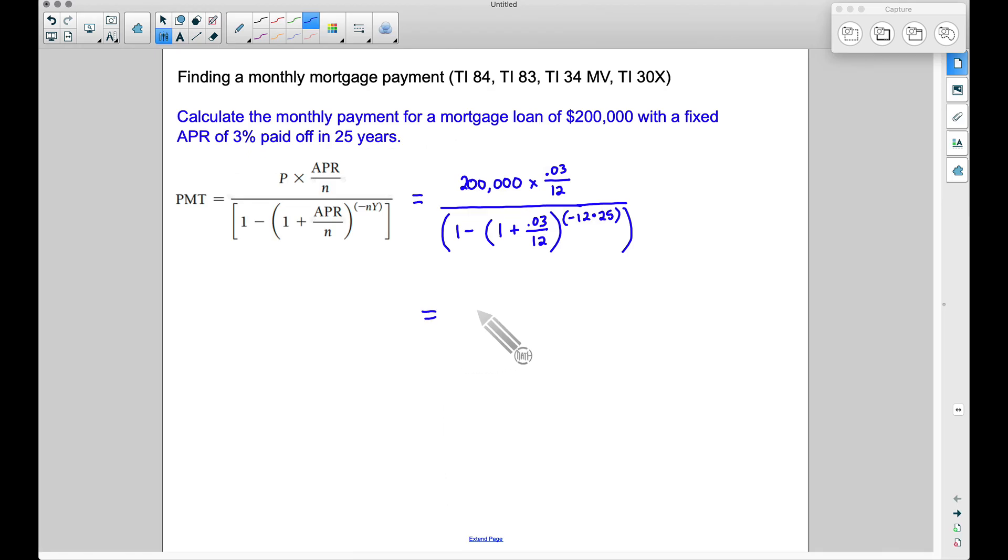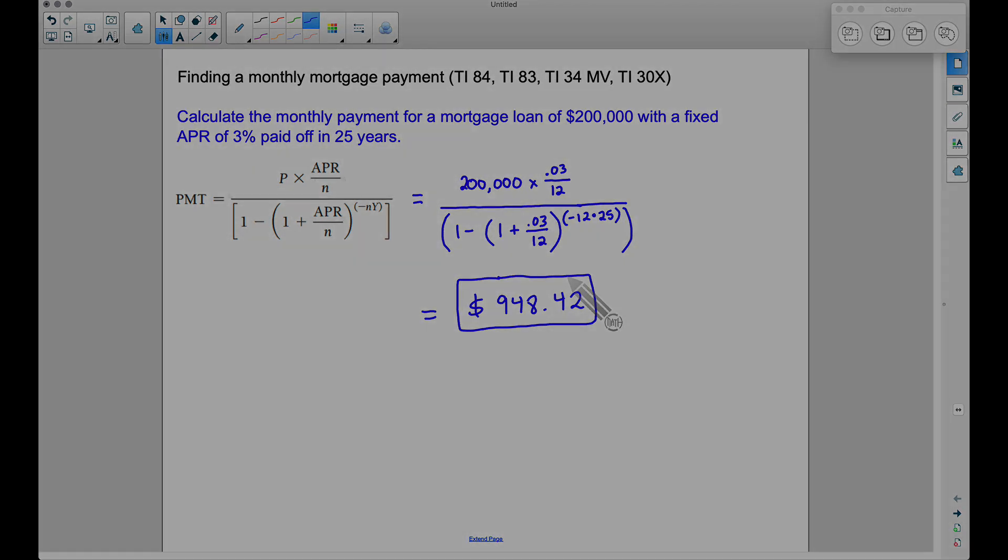Based on these various techniques, we're still getting the exact same number. The monthly mortgage payment will be $948.42. Hopefully with all these various approaches I've showed you, you can apply this to pretty much any calculator as long as it has an exponent button and parentheses. If you have any questions, leave a comment below. That's it for this video - I hope it helped.